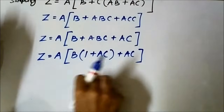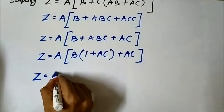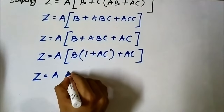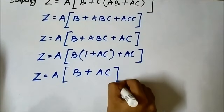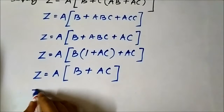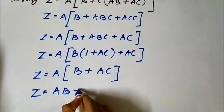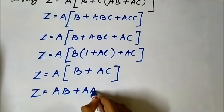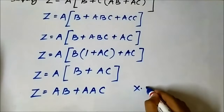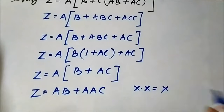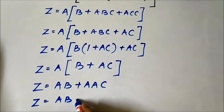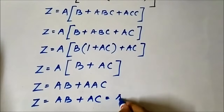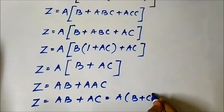So 1 plus a·c will be 1, giving z equals a·b plus a·a·c. Since any Boolean variable AND'd with itself gives itself, a·a equals a, so it will be z equals a·b plus a·c.